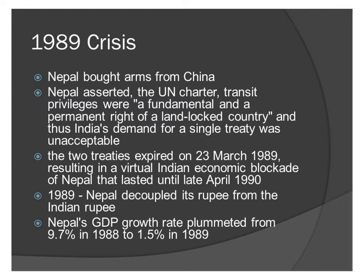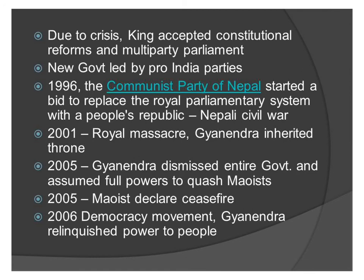Another reason for the 1989 crisis was that Nepal bought arms from China. Nepal asserted that according to the UN charter, it is a fundamental and permanent right of a landlocked country to have transit privileges, and Nepal tried to internationalize the issue, but it did not help. In 1989, Nepal also decoupled its rupee from the Indian rupee, which led to a decrease in Nepal's GDP growth rate. The two treaties expired in March 1989, leading to an economic blockade of Nepal that lasted until late April 1990, causing a huge humanitarian and economic crisis. Because of this crisis, there was much criticism against both India and the ruling establishment. The king had to accept constitutional reforms and form a multi-party parliament, and this new government was led by pro-Indian parties, so Indo-Nepal relations thawed and friendship developed.